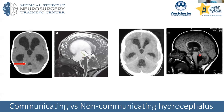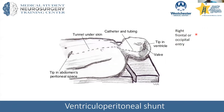In the communicating example, everything is enlarged — the lateral, the third, and the fourth ventricle. The first example with the pinch point is called obstructive or non-communicating hydrocephalus, meaning the ventricles are not in direct connection with each other. In communicating hydrocephalus, there's no focal obstruction — the problem is at the end of the pathway where CSF is not getting absorbed or too much is being produced.